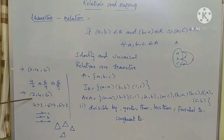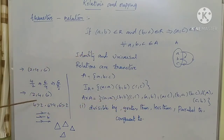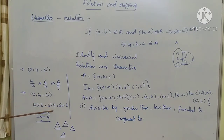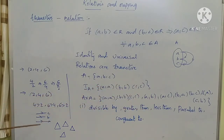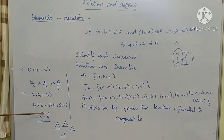For the greater than example, take 2, 4, and 6. Here, 4 is greater than 2 and 6 is greater than 4, so 6 is also greater than 2 — this type of relation is also called transitive. For parallel to: if A is parallel to B, and B is parallel to C, then A is also parallel to C — this is another example of a transitive relation.